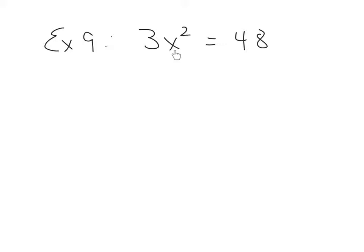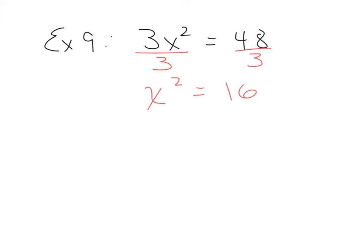Example 9: 3x squared equals 48. The exponent is not isolated here — it's only on the x, not the 3. If you put a radical now, that 3 gets stuck under it with no exponent to cancel. So first divide both sides by 3 to isolate the exponent: x squared equals 16. Now we can apply the radical. Don't forget the radical generates a plus-minus, so x equals ±4.